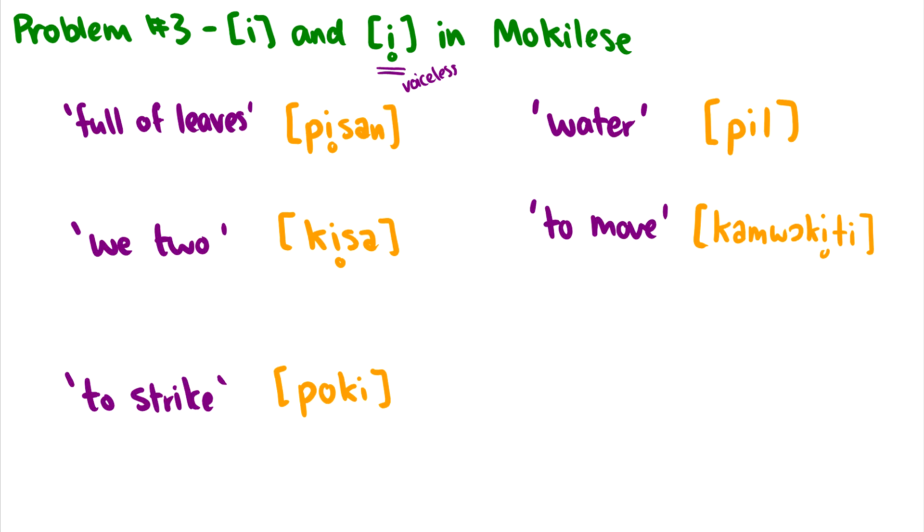Okay. So a good thing to do is to list out all of the environments. So I have the [i] and then I have the voiceless [i̥], which I'll just call the voiceless [i] so you can clearly hear it when I say it. So this [i], the sound [i], let's write out all the words and places. So in to strike, [poki], it occurs at the end of the word and right after a [k]. In water, it occurs between [p] and [ul]. And in to move, it occurs at the end of the word after [t]. What about this voiceless [i̥]? Well, in [pisan], it occurs between [p] and [s]. In [kisa], it occurs between [k] and [s]. And in [kamuokiti], it occurs between [k] and [t].